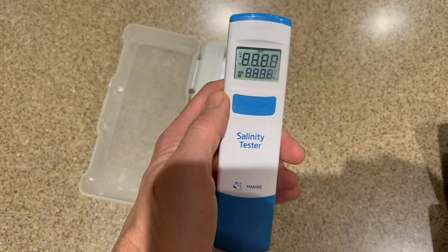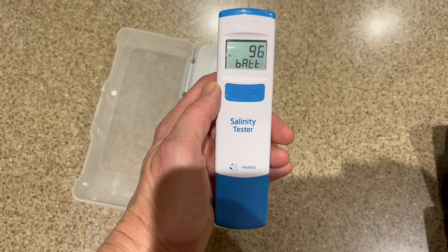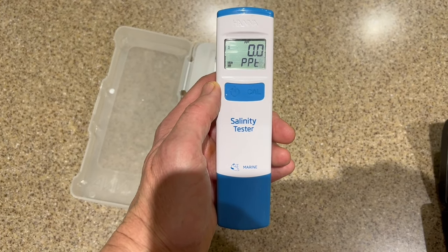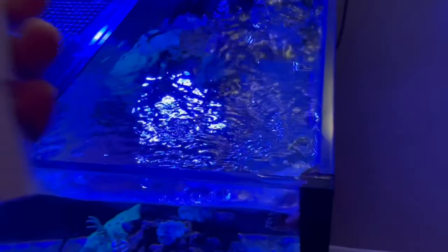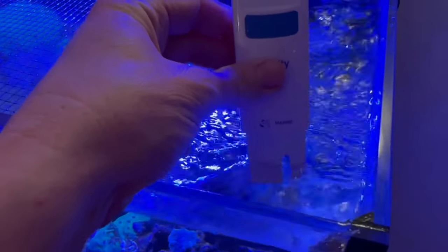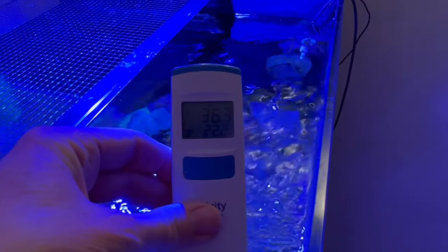An alternative to a refractometer is the HANA checker. Now I've got the HANA salinity checker, I've had it for a while and it's really convenient. You just dip it into the tank, keep it there for maybe 30 seconds and it will tell you what your salinity will be.